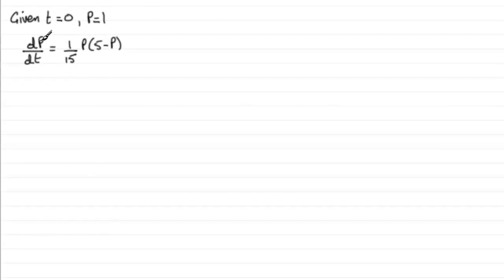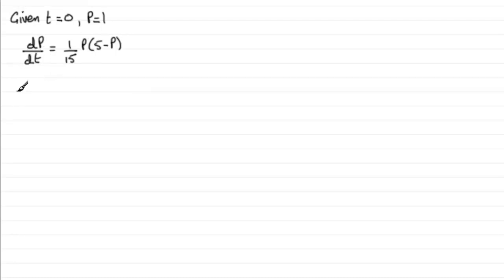In this question, we're asked to solve this differential equation, given that t equals 0 when p equals 1. To do this, we need to separate the variables — put the p's on one side and the t's on the other. Dividing both sides by p(5 minus p) and rearranging gives us 1 over p(5 minus p) dp equals 1/15 dt.